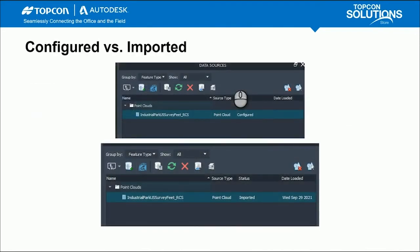One thing in InfoWorks that's slightly confusing is 'configured' versus 'imported.' These are two screenshots of the data sources in InfoWorks. When you go to add that data source and click the point cloud to add it, it'll say 'configured.' That can be confusing because you would assume it's past tense and the model should be visible. You actually need to right-click on that model and then click OK or close and refresh, and then it will change from the configured state to the imported state. When you see that imported state, that means that RCS or RCP point cloud is now visible in InfoWorks.